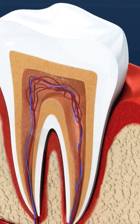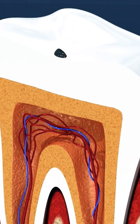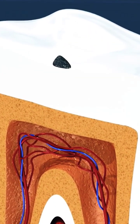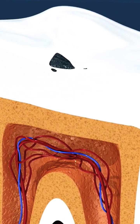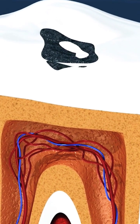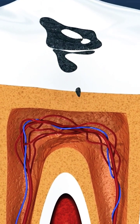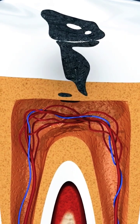Did you know that a root canal system infection can occur without any signs or symptoms? A root canal is made up of blood vessels, nerves, and connective tissue that can become inflamed or infected.